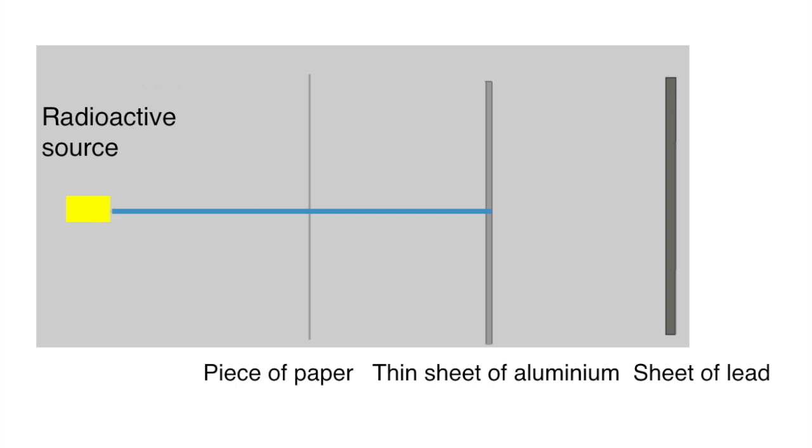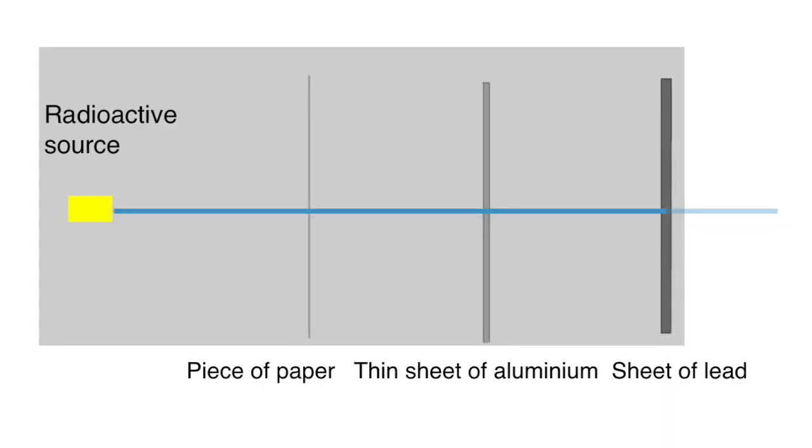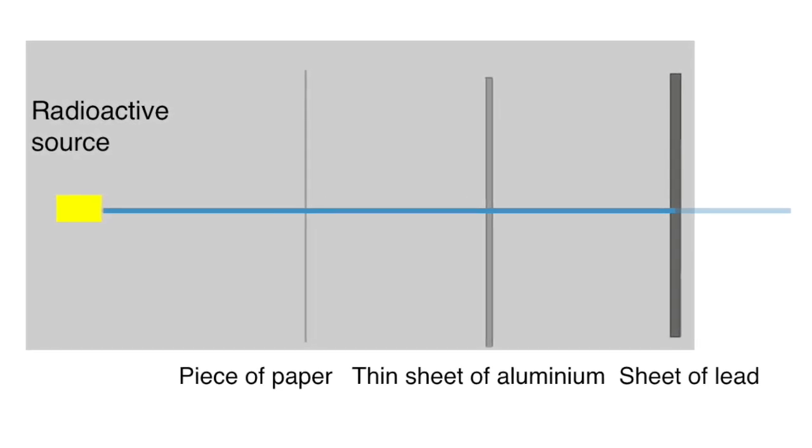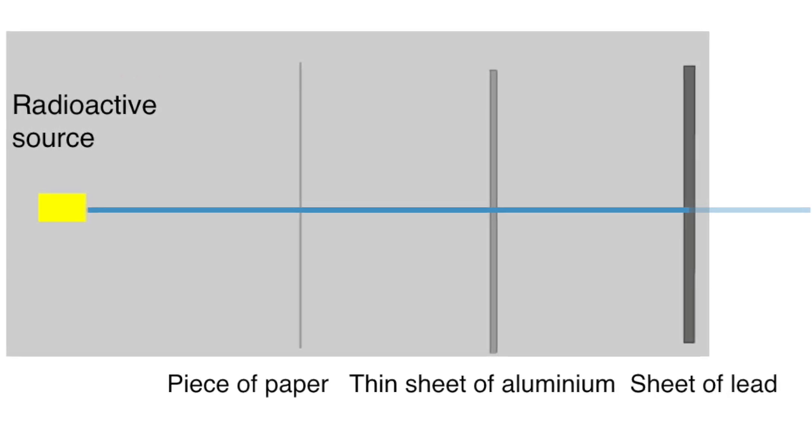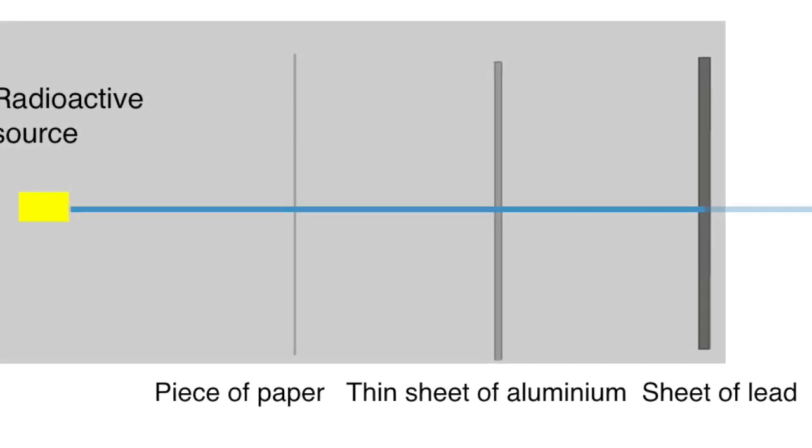Onto gamma radiation. Gamma passes comfortably through the sheet of paper, through the thin sheet of aluminum, and is reduced or attenuated by the lead but is not completely stopped. In fact, it is very difficult to absorb all of gamma radiation. In air it will spread out and be slightly absorbed by it, but it has an almost infinite range.